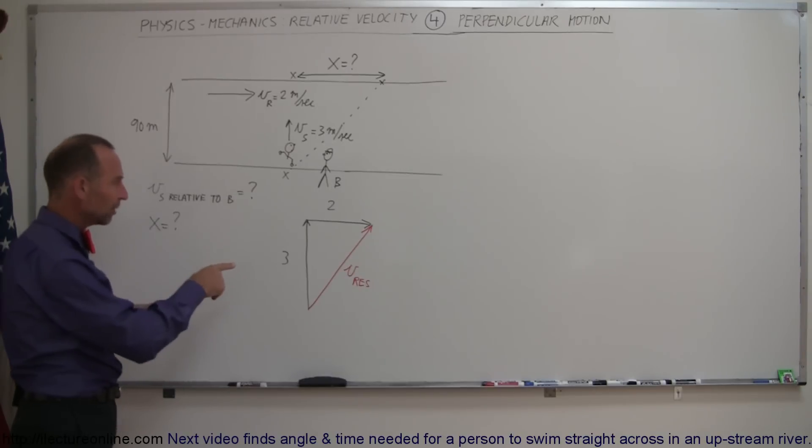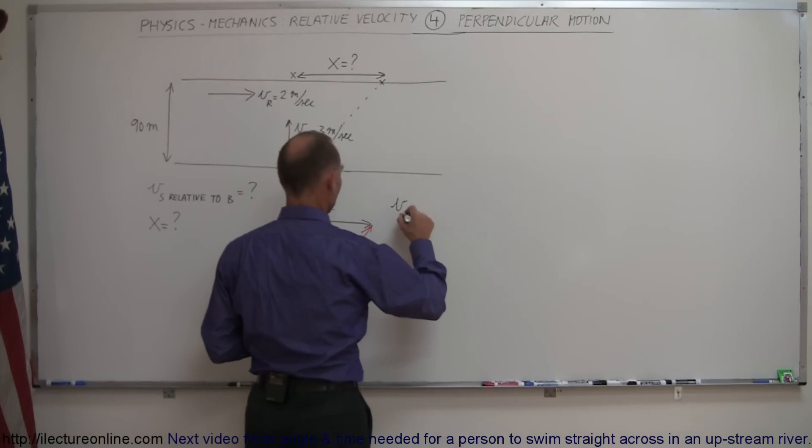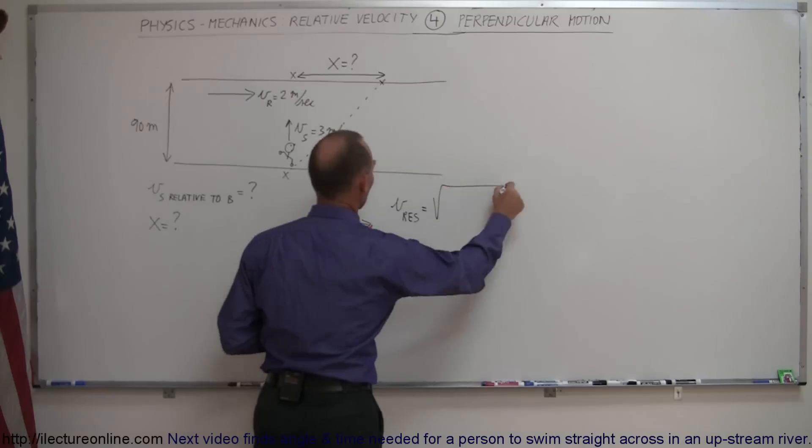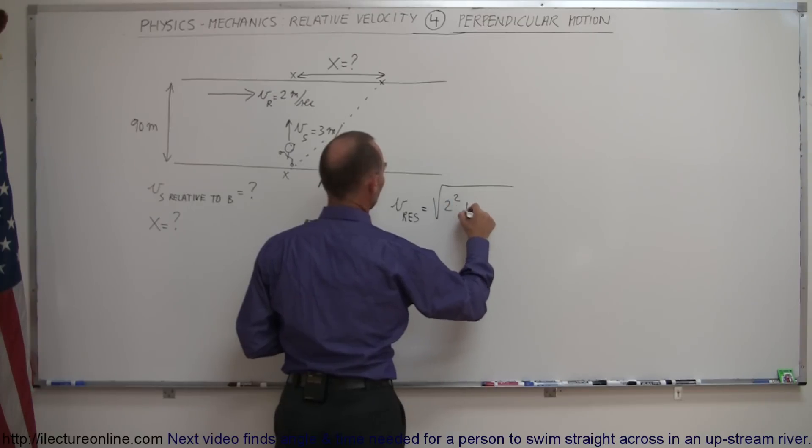Alright, so if we want to find the magnitude of that, we simply have to use Pythagorean theorem. So we can see that the velocity of the resultant or the apparent velocity is equal to the square root of the sum of the squares. So that would be 2 squared plus 3 squared.